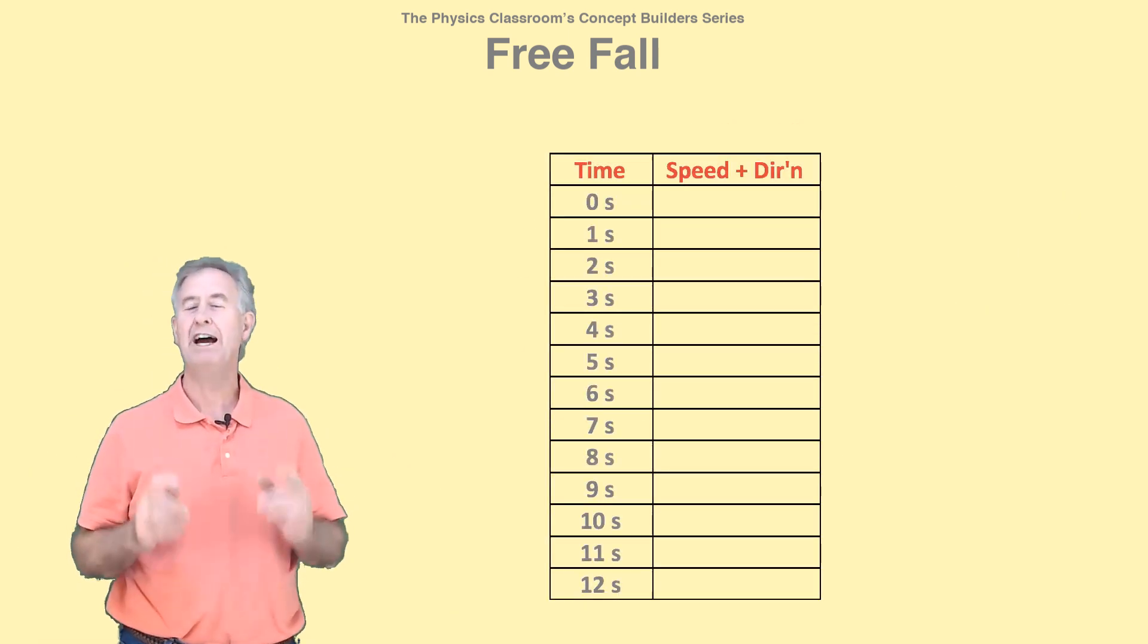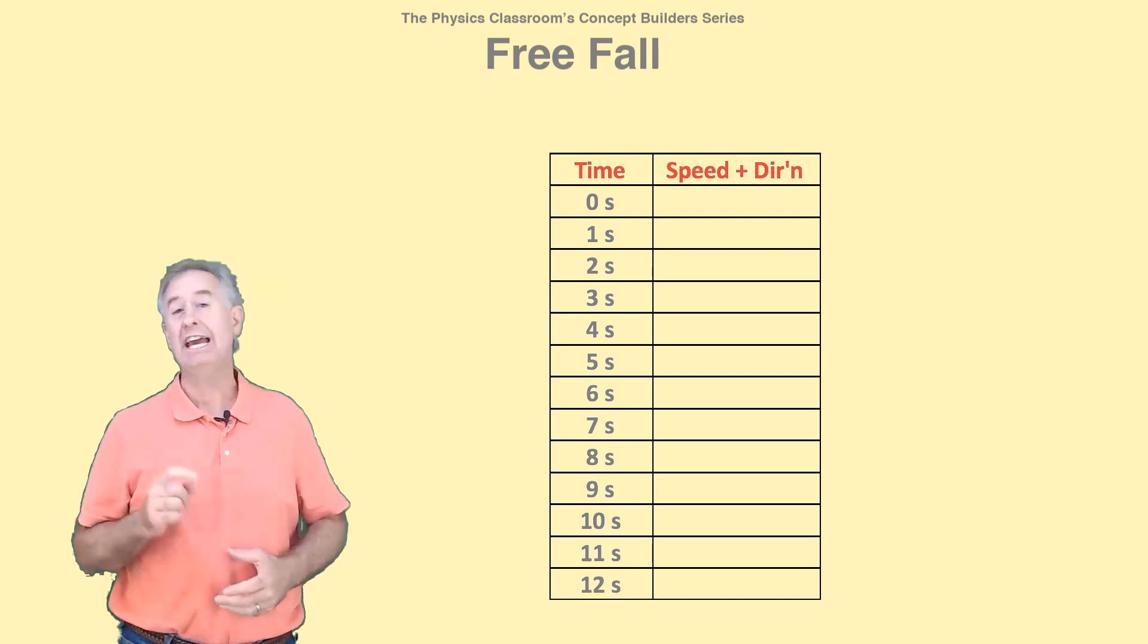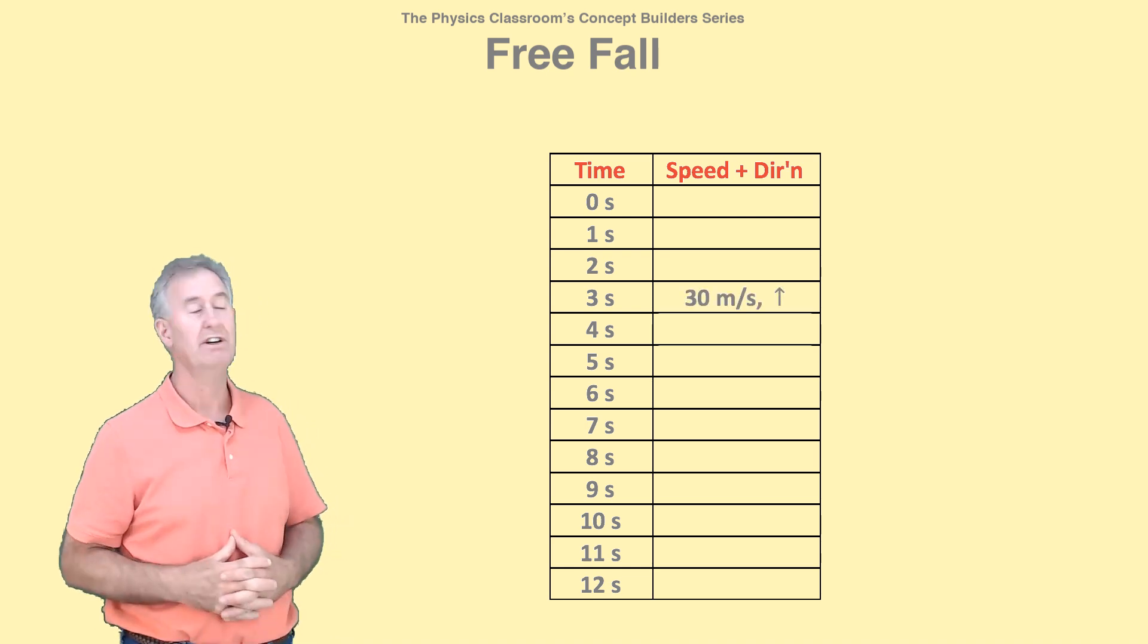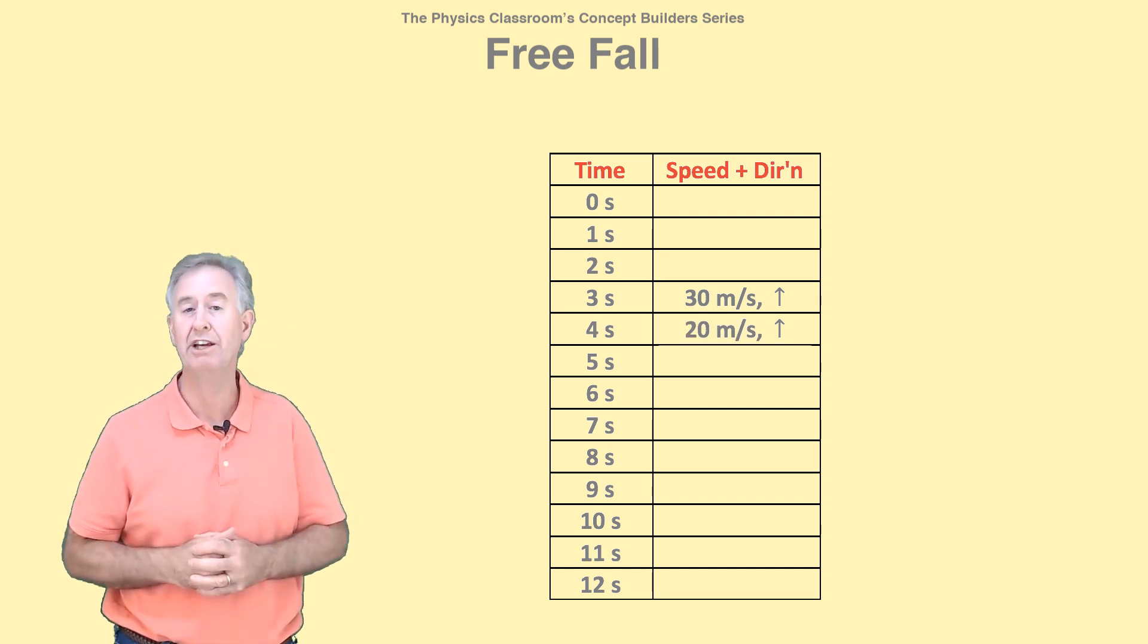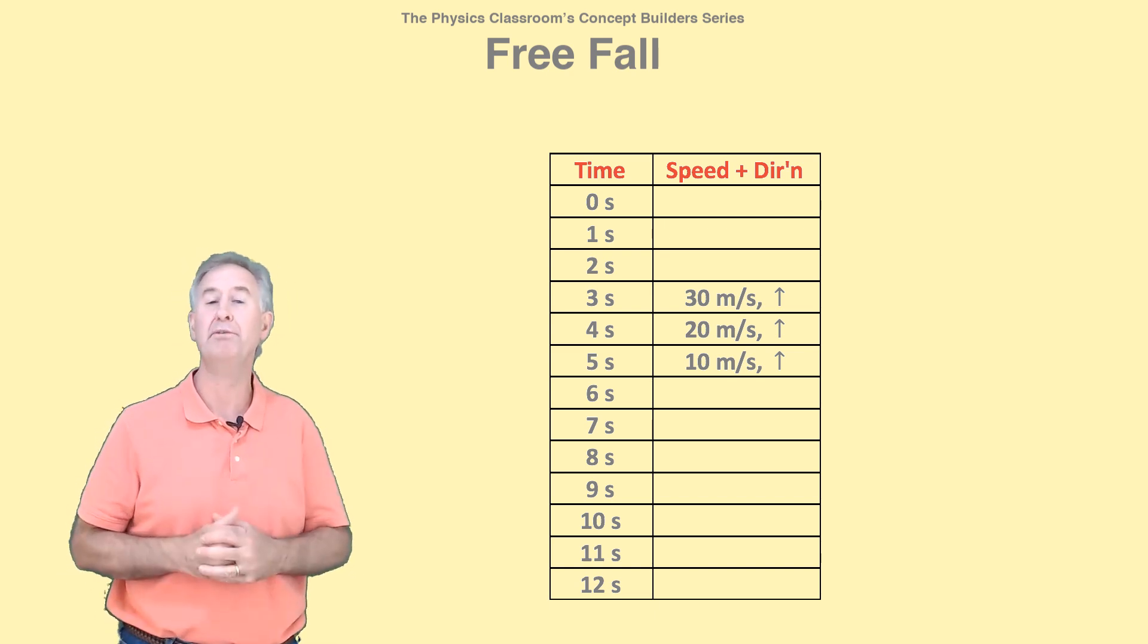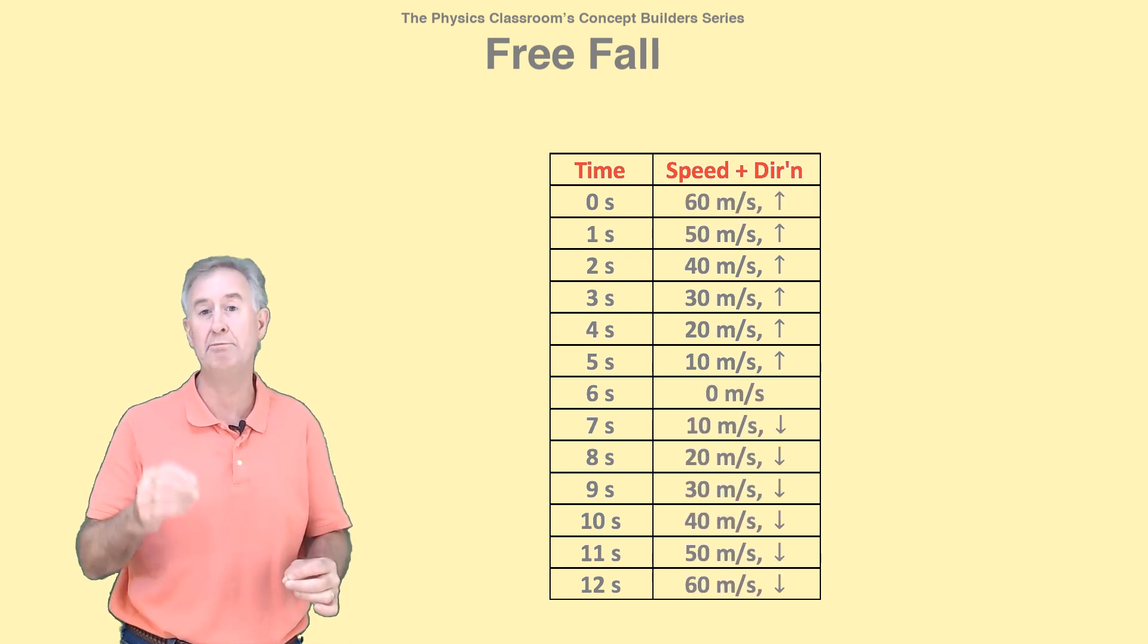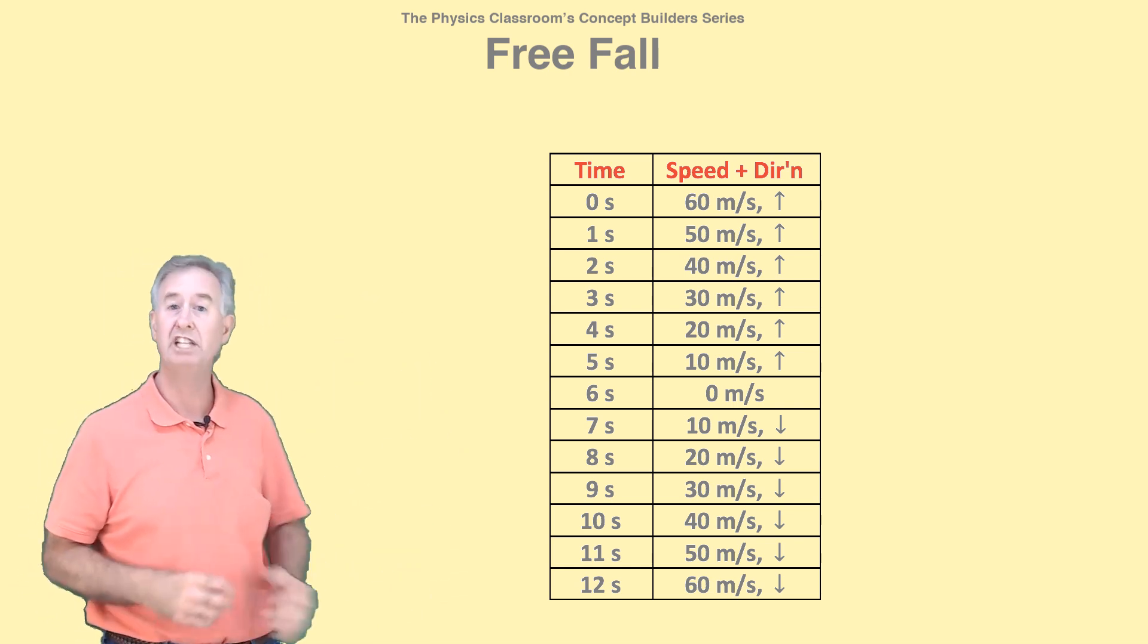It's worth noting that values of t and v are predictable. Knowing the velocity at any time allows you to predict the velocity at every time. Suppose you know that at three seconds the velocity is 30 meters per second. One second later, it's 10 meters per second slower. Another second after that, 10 meters per second slower still. One second prior to three seconds, it would be 10 meters per second faster. Knowing the acceleration to be 10 meters per second per second, you can determine the entire history of t and v.